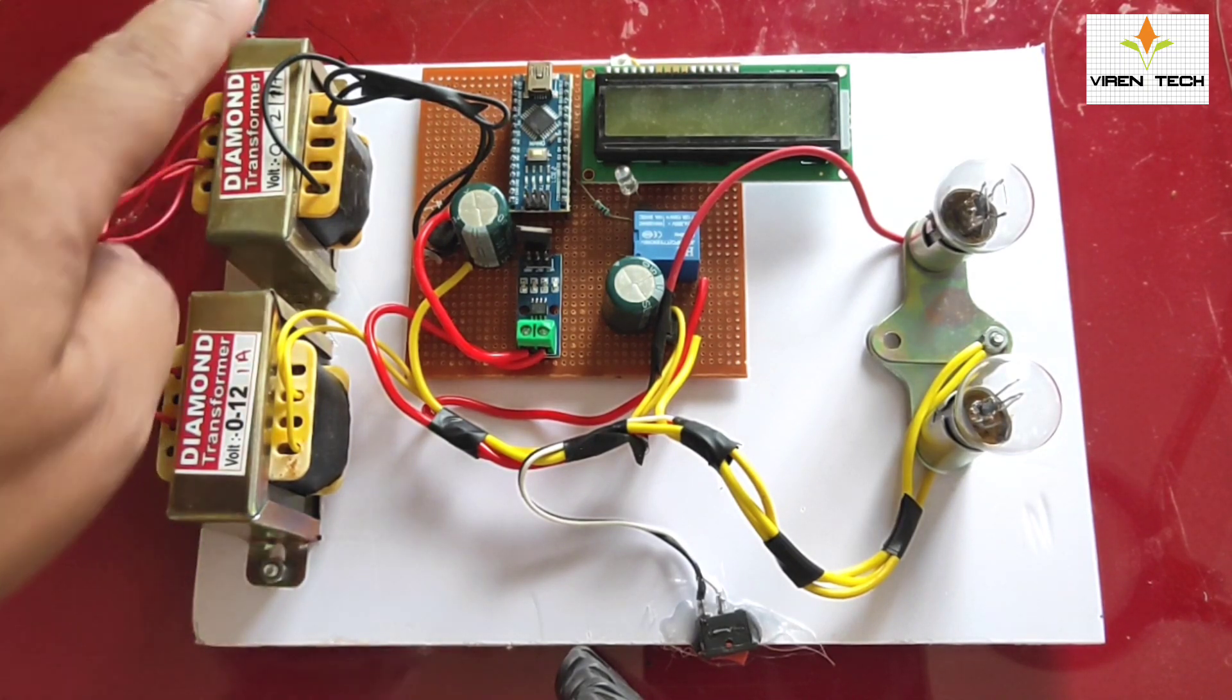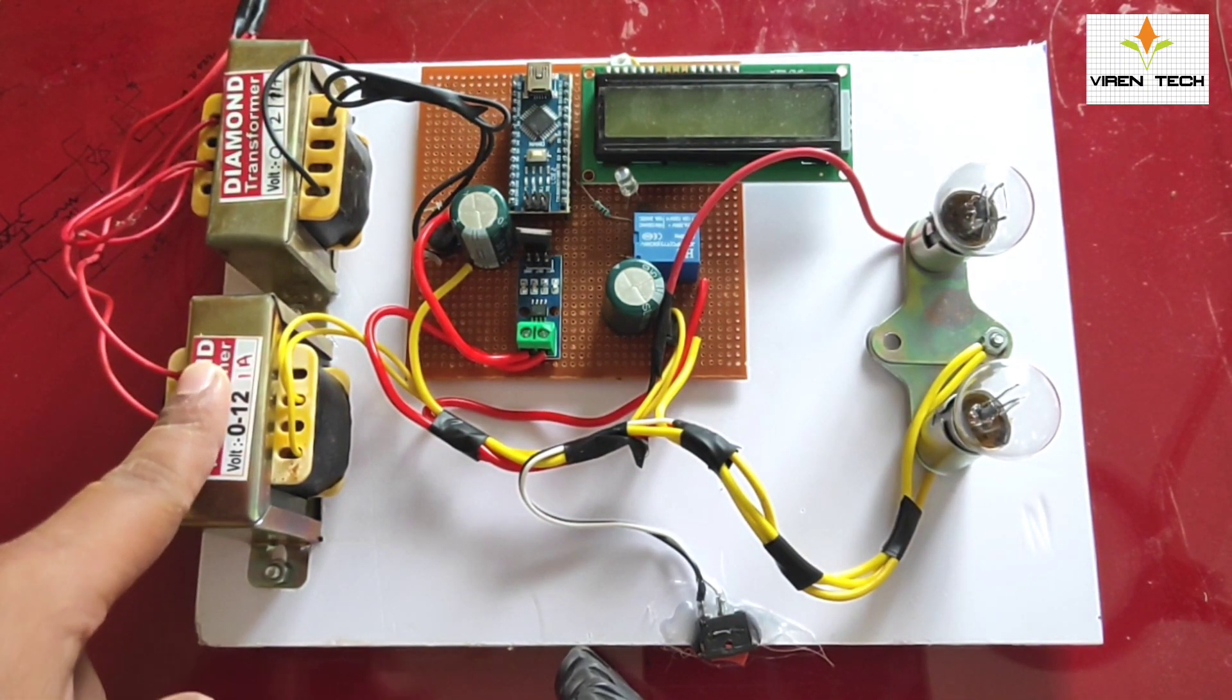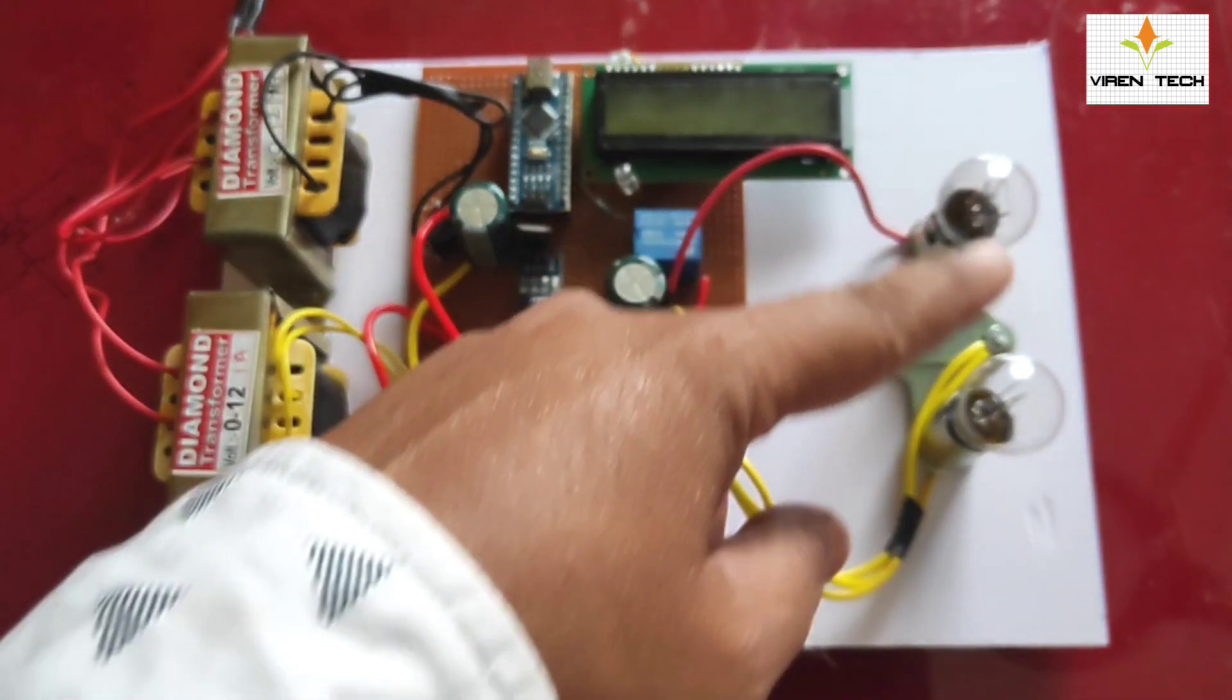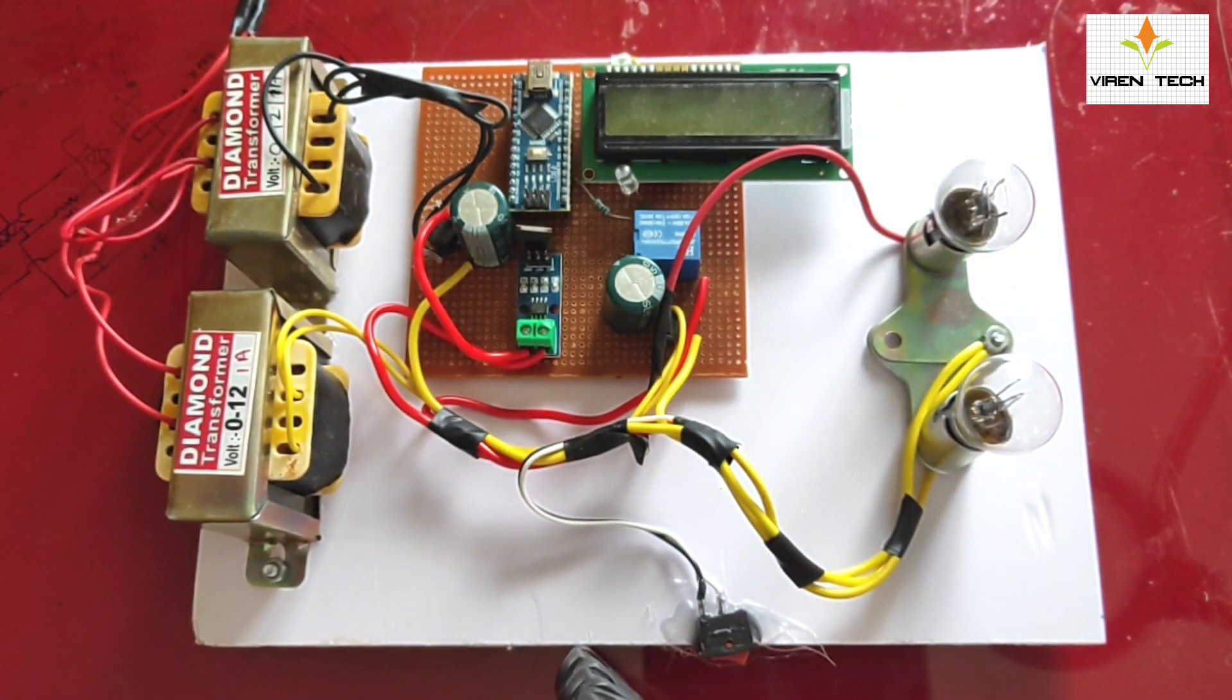In this project we have used two transformers. We have used two 55 Watt loads as DC bulbs which is having 4.5 Watt each.